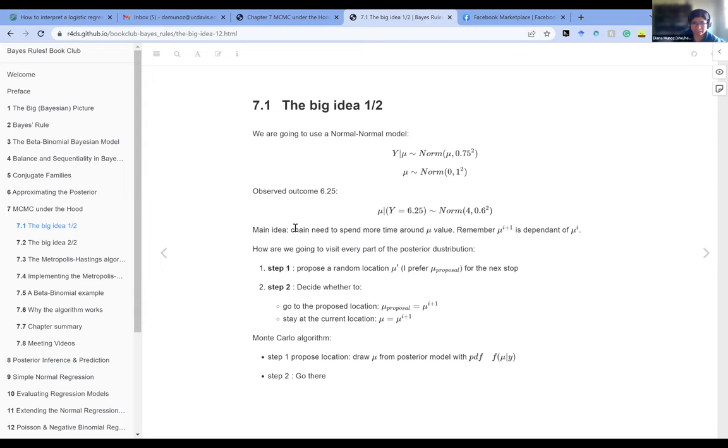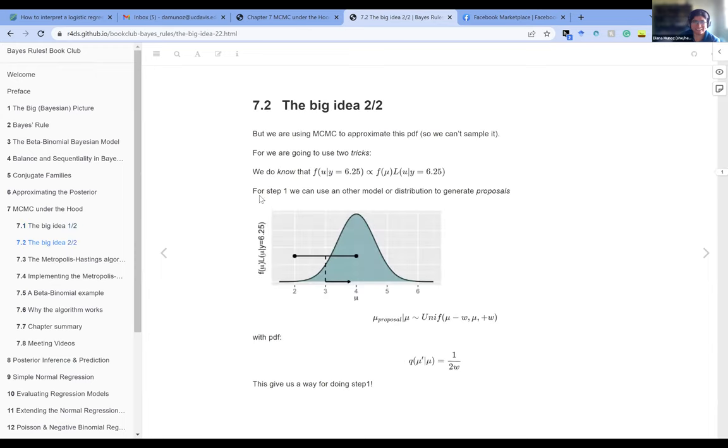With the Monte Carlo algorithm, you propose the location by drawing from a posterior model and then you go there. But sometimes we don't know what that posterior model is, which is where the Metropolis-Hastings chain comes in. You want to use this instead of the Monte Carlo because these posteriors tend to be more complicated.